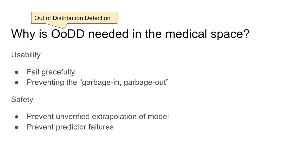We argue that the necessity of out-of-distribution detection is supported by two considerations. The first is usability. As we transition machine learning tools from research labs to the hands of the end user, usability of these tools becomes pivotal to their success. One common characteristic of good usability is to fail gracefully when handling user errors. In ML-assisted diagnostic tools, this means equipping the tool with the capacity to reject predictions on erroneous input data, thereby preventing the garbage-in, garbage-out scenario. For ML tools facing users outside of the computer science community, this clarity is particularly important.